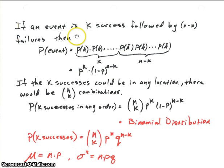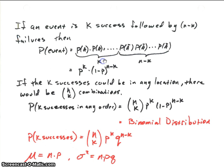We know that because they're all independent, we can multiply their probabilities. So we have the probability of success times the probability of success, and so on — we have that k times — then the probability of failure, n minus k times.